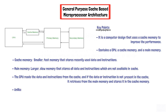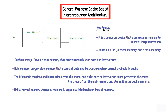Unlike normal memory, the cache memory is organized into blocks or lines of memory. And when the CPU reads the data or instructions from the cache, it reads the entire block or line of memory. This technique is known as cache line or block fetching, as it helps to reduce the number of memory accesses required by the CPU.